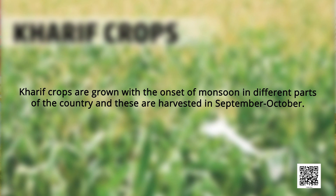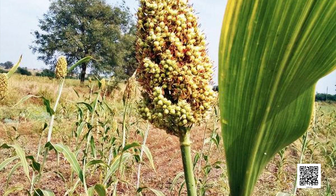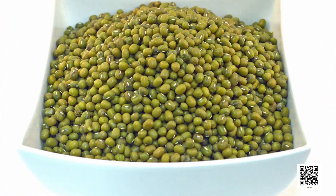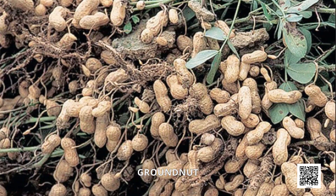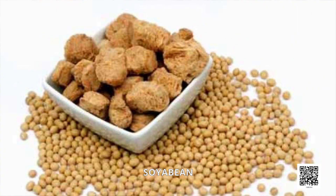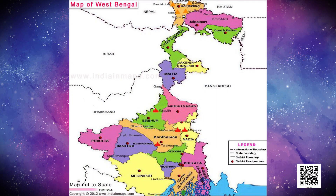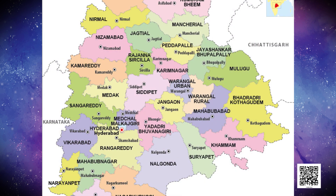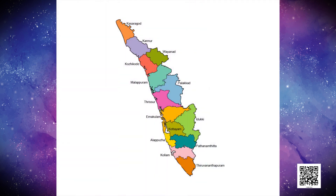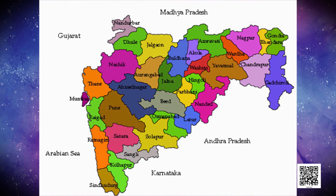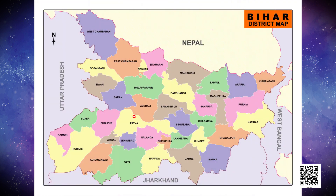Kharif crops are grown with the onset of monsoon in different parts of the country and are harvested in September and October. Important crops grown during this season are paddy, maize, jowar, bajra, toor, moong, cotton, jute, groundnut and soyabean. Some of the most important rice-growing regions are Assam, West Bengal, coastal regions of Odisha, Andhra Pradesh, Telangana, Tamil Nadu, Kerala and Maharashtra, particularly the Konkan coast, along with Uttar Pradesh and Bihar.